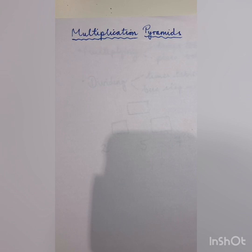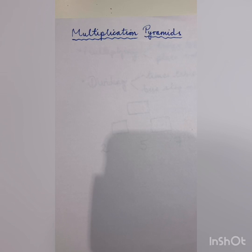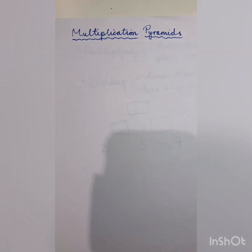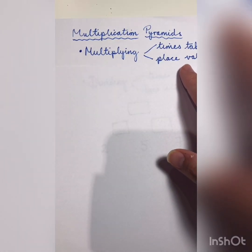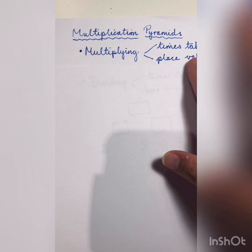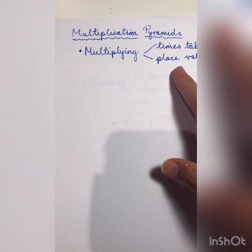So maths for this week is going to be on some puzzles and some code breaking. Today we're going to be looking at multiplication pyramids. Now multiplication pyramids weren't exactly used in World War II, but they're a really good place to start, and they involve some careful thinking using both multiplication and division. For today you'll need to be thinking about multiplying, using your times tables knowledge, and also place value for multiplying bigger numbers. We could write down calculations, but sometimes it's just as easy to split up numbers, which I'll show you in a minute.